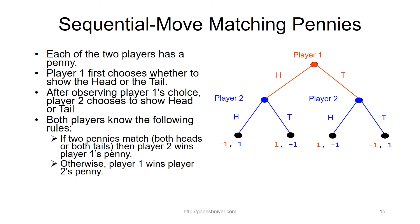Another example is sequential move matching pennies. Each of the two players has a penny. Player one first chooses to show head or tail; after observing player one's choice, player two chooses head or tail. Both players know the rules: if the two pennies match, player two wins; otherwise player one wins. Player two will always match — if player one shows head, player two shows head; if tail, player two shows tail — because player two has the advantage of seeing the history. This is a very one-sided game.